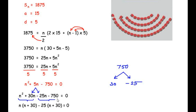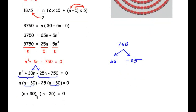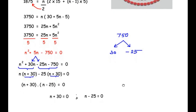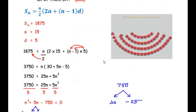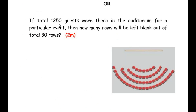Rewriting: n² + 30n − 25n − 750 = 0. Grouping: n(n + 30) − 25(n + 30) = 0. Taking (n + 30) as a common factor: (n + 30)(n − 25) = 0. Equating each factor to zero: n = −30 or n = 25. Since n represents the number of rows, it cannot be negative, so we discard n = −30. Therefore n = 25, meaning 25 rows are required to accommodate 1875 guests.